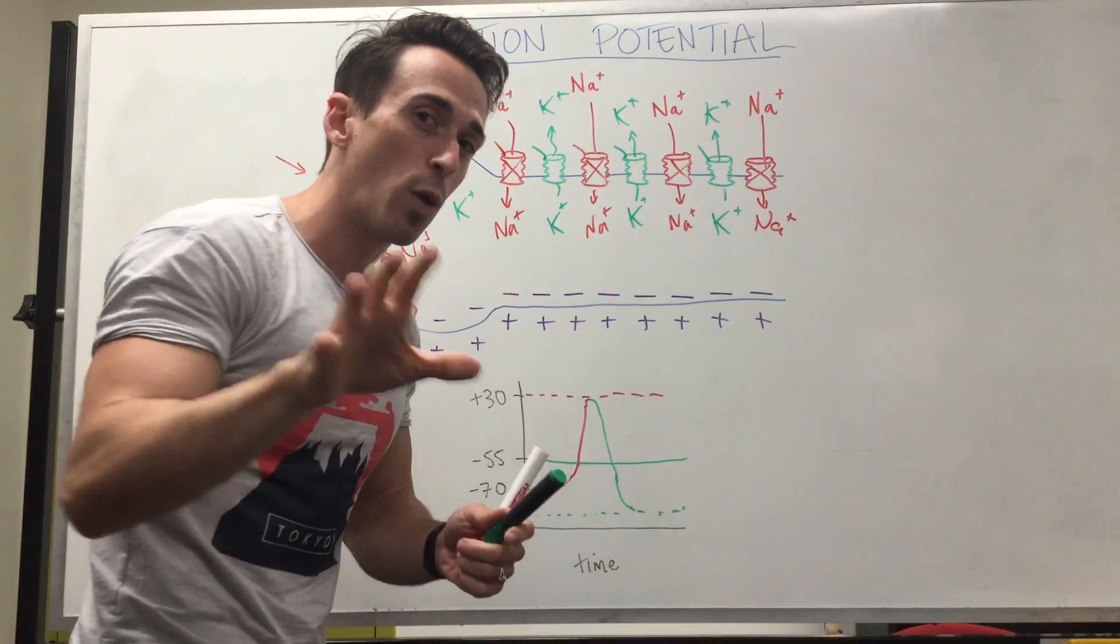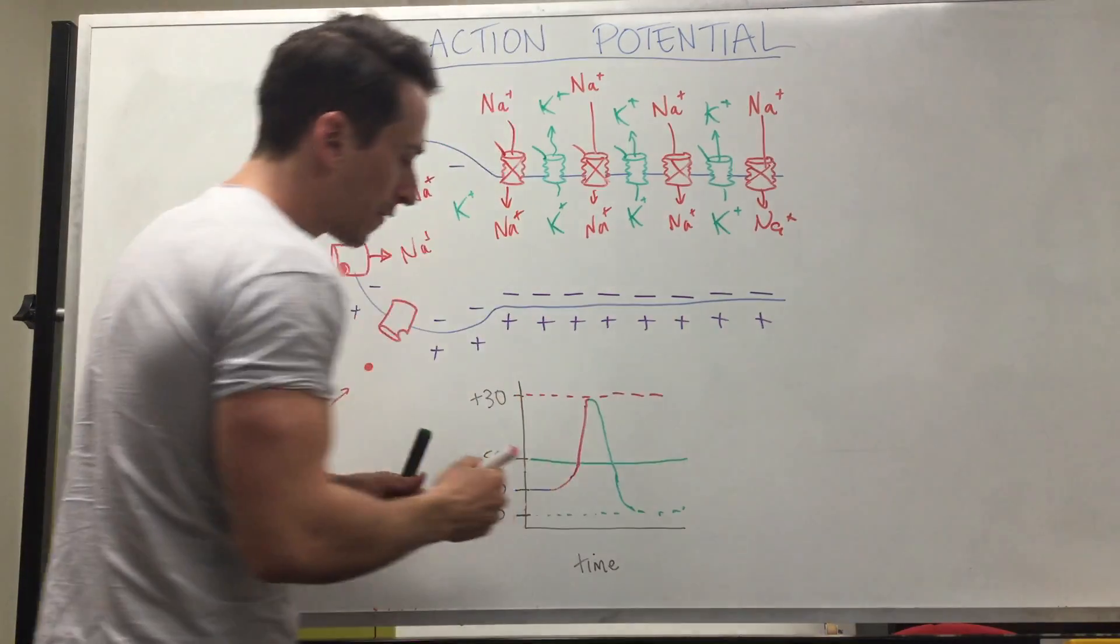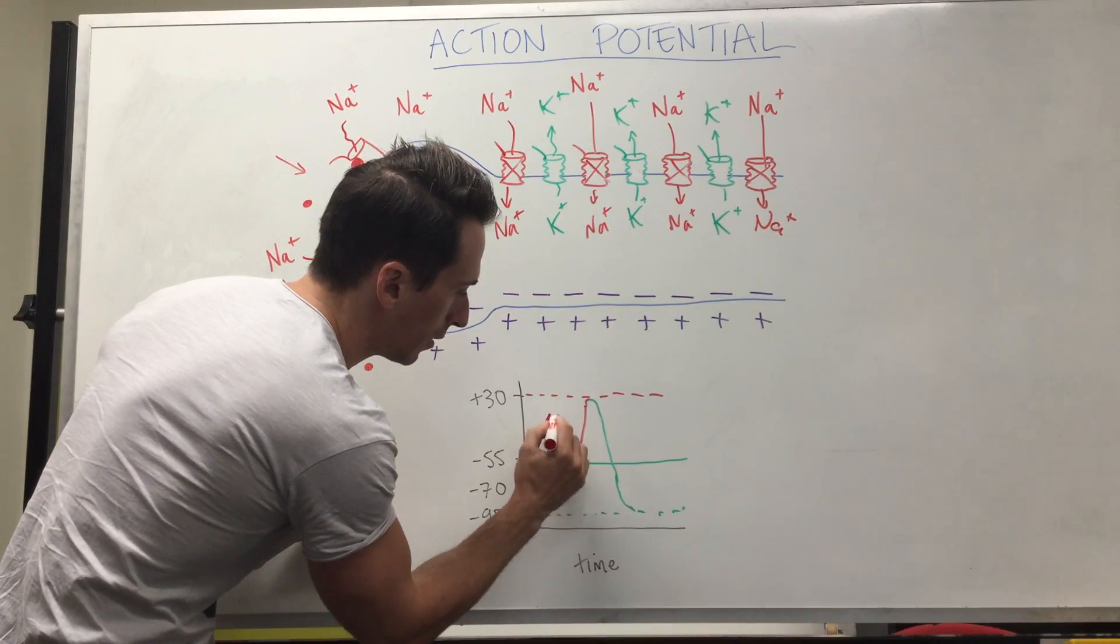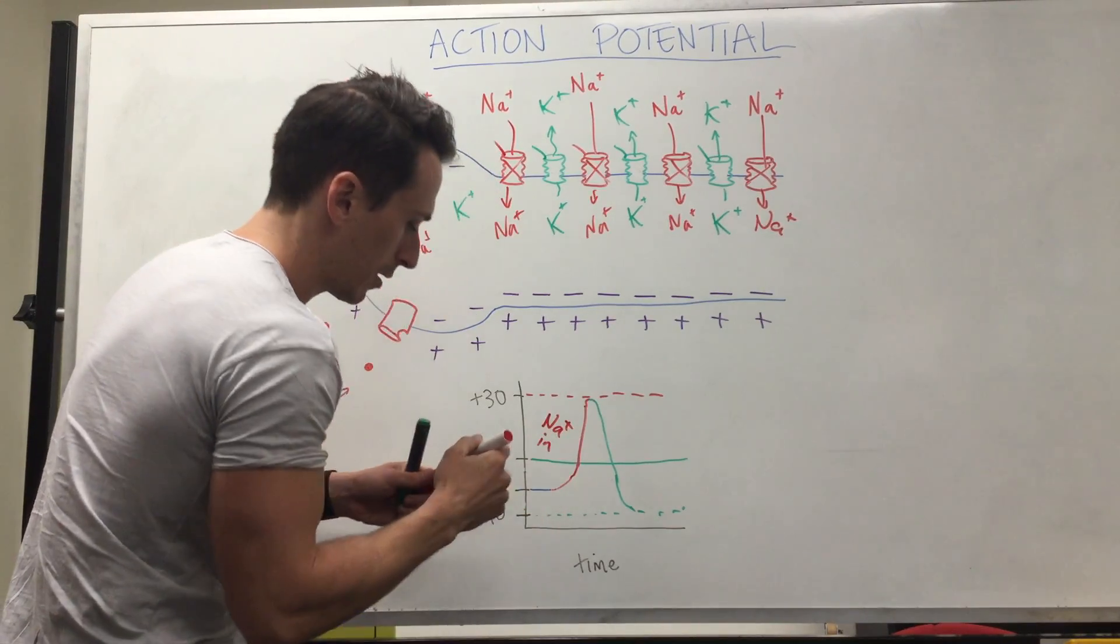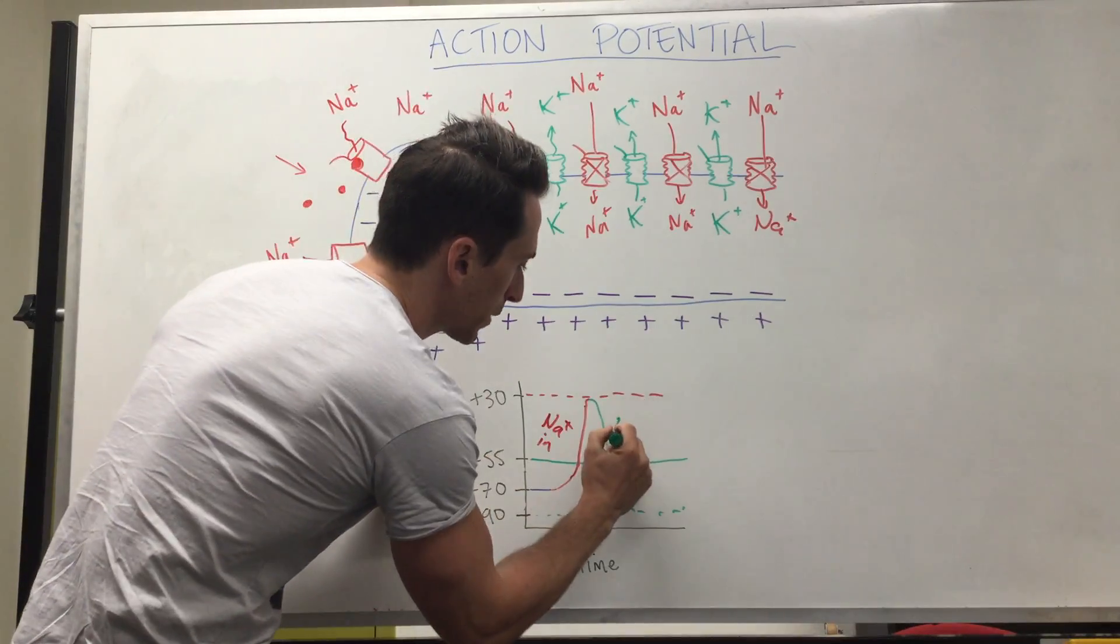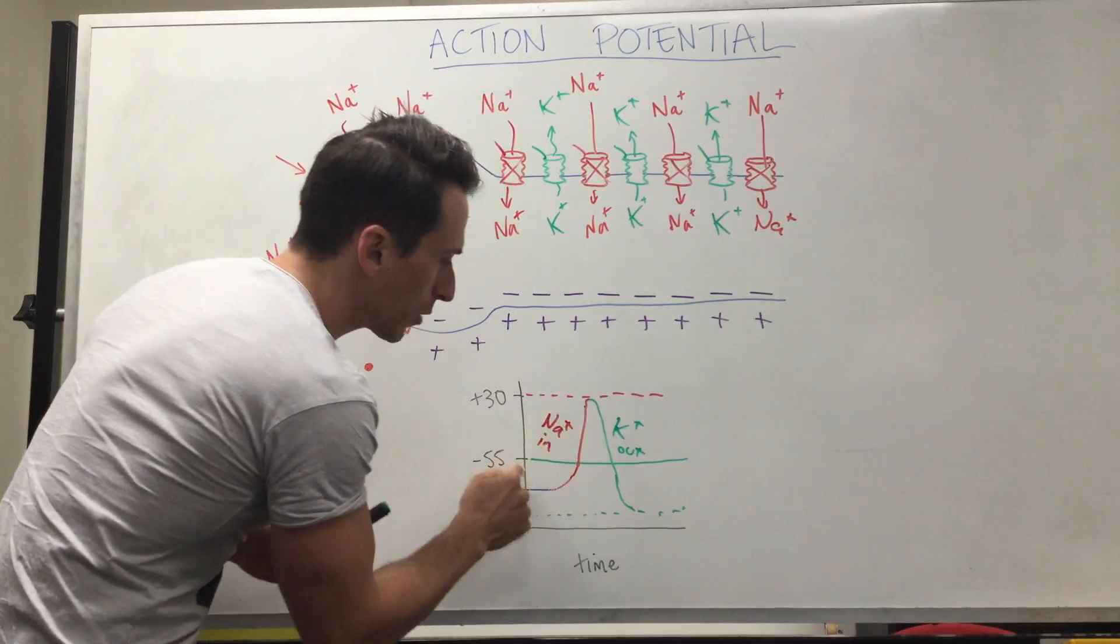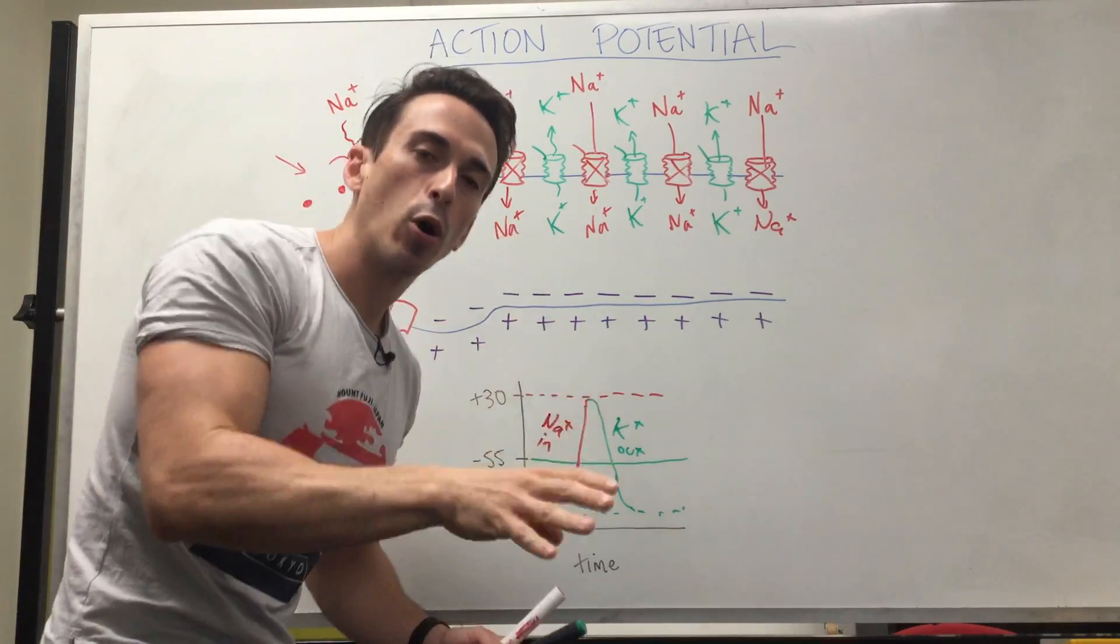So a couple of phases when we look at an action potential. The first phase is the sodium coming into the cell. Sodium coming in, and that next phase is potassium going out.